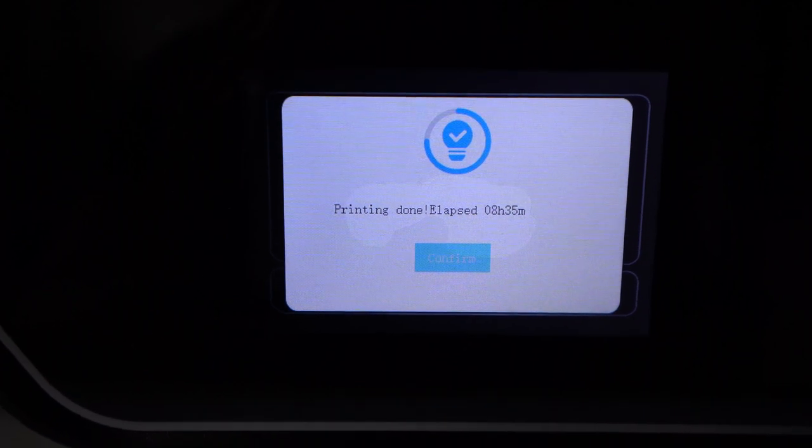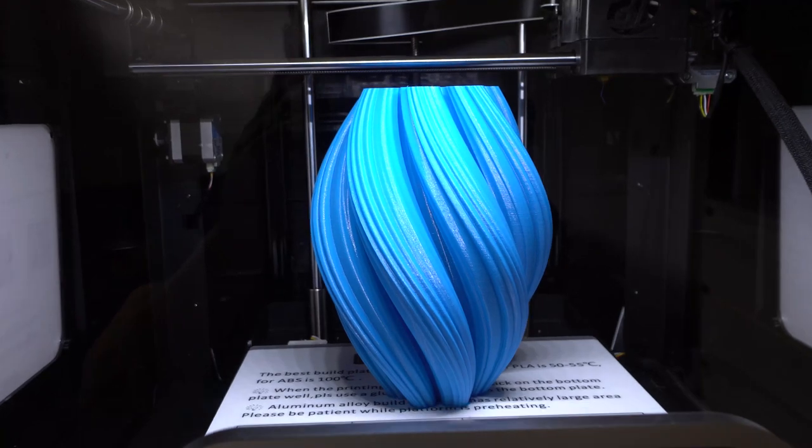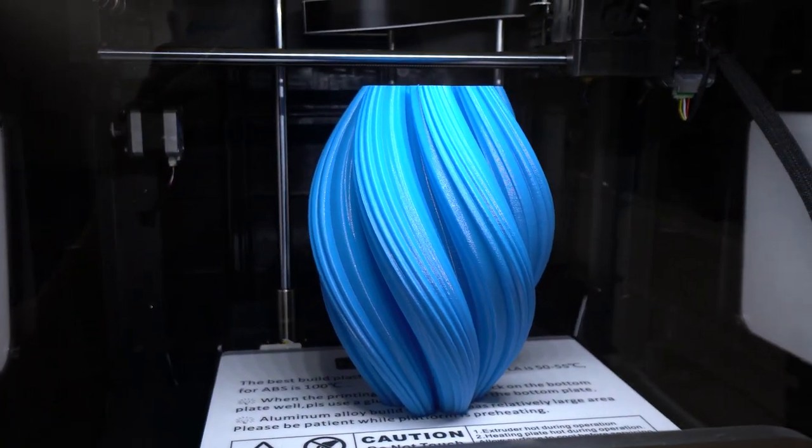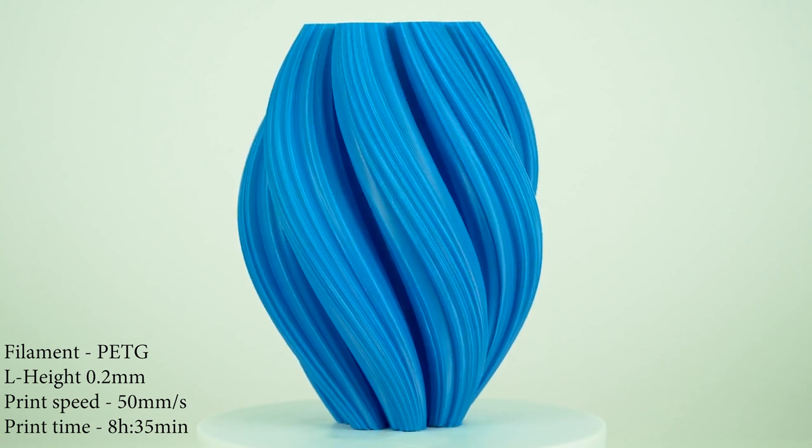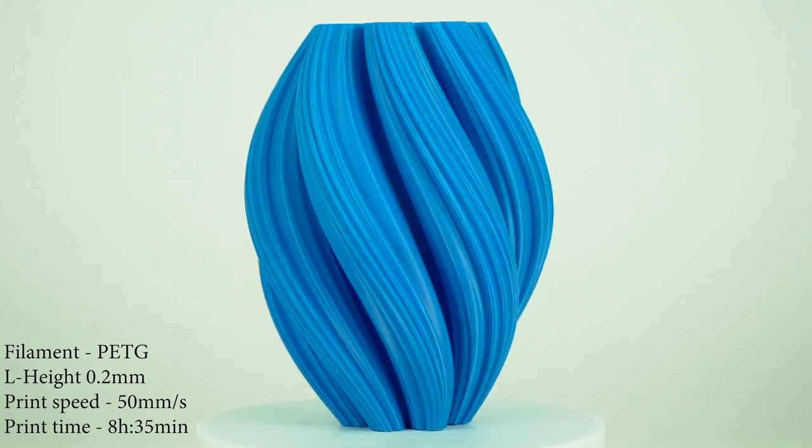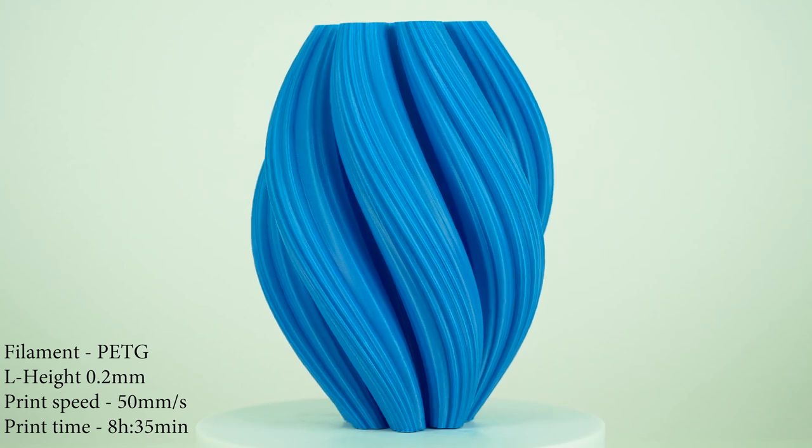And now it's time to test the PETG filament. So I left the printer to print overnight and in the morning this beautiful vase was finished and it turned out perfect. Here is a close look. The layers bonded so nice and I love it.